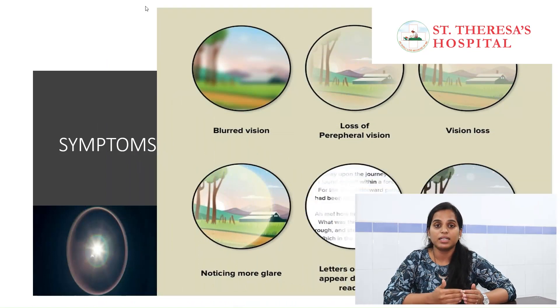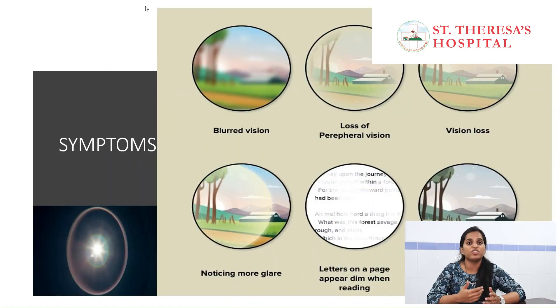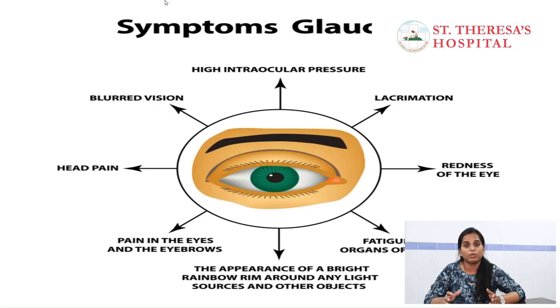Coming to the symptoms — unfortunately, glaucoma is a silent thief of vision. At the beginning there are no symptoms. Loss of peripheral vision begins first. Moderate to advanced symptoms can include vision blur, halos around lights, and in advanced stages, red eye, excessive watering, and pressures of 40 and beyond.